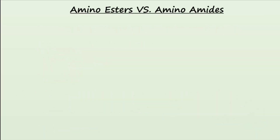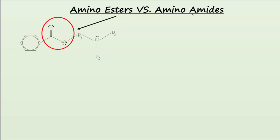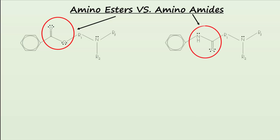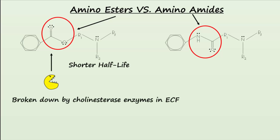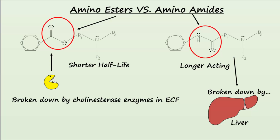Local anesthetics can be separated into two broad categories based on their structure: amino esters and aminoamides. Amino esters have a shorter half-life because cholinesterase enzymes in the extracellular fluid break them down. Aminoamides, however, are longer acting because they are mainly broken down by the liver.